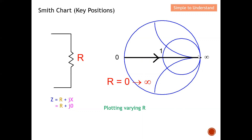On the other side, a resistance of infinity represents an open circuit, and right at the middle is the matched point. For a purely resistive value, the point can appear anywhere along the resistance line. For example, if the resistance is one, I plot the point at 'one' along this line — that is how you plot a resistor value.